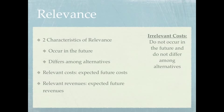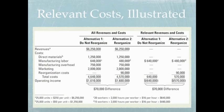Let's take a look at an illustration regarding relevance. We have two alternatives dealing with a reorganization of a business — alternative one and alternative two — and notice that we have four columns of data. The first two columns show all of our revenues and costs, and the second two columns show just the relevant revenues and costs. Alternative one is to not reorganize and alternative two is to reorganize.